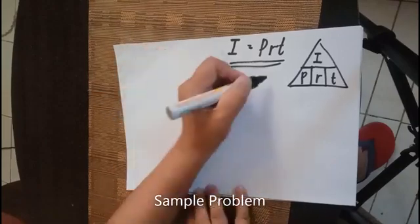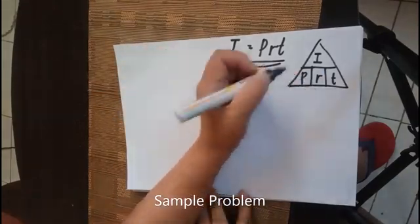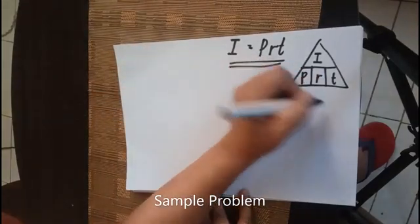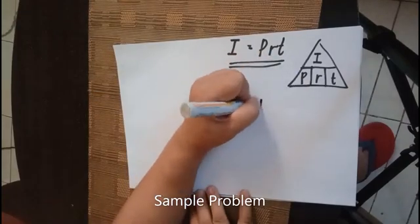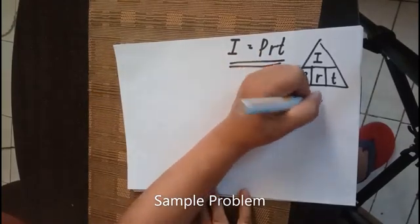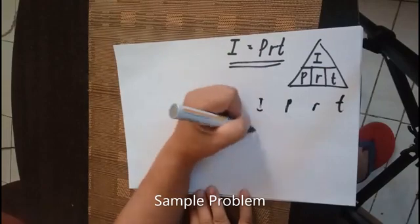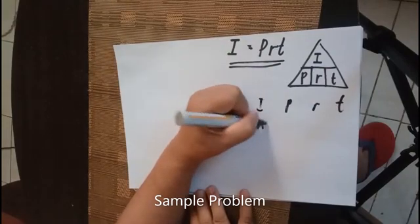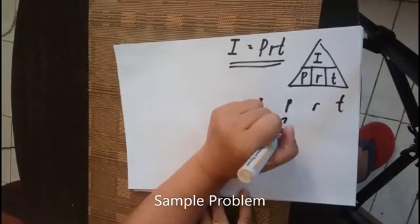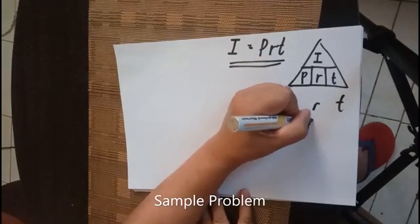I will put a sample problem here and then we compute. So I equals PRT. Given here is $50,000 interest, the missing is principal, we have 4% rate.